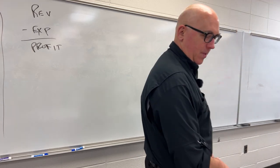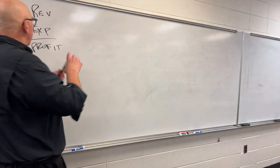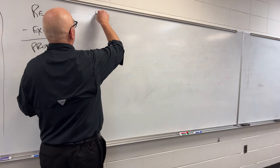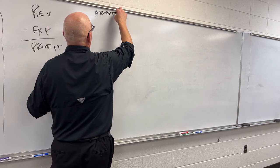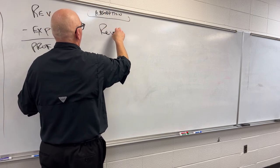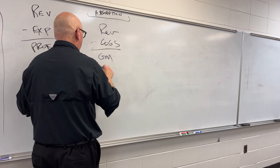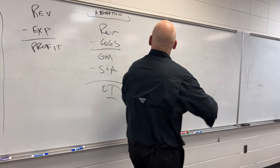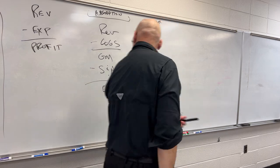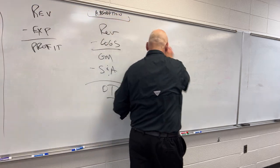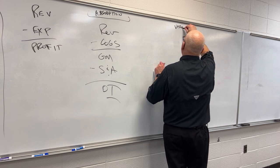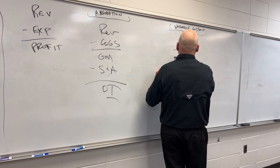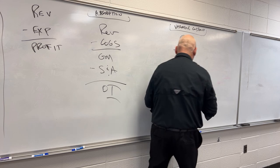Absorption costing income statement format. So this is the most simple calculation, but there are actually a couple of different ways this can be formatted. Absorption costing income statement format is: revenue minus cost of goods sold equals gross margin, minus selling and administrative expenses, equals operating income. And variable costing income statement is: revenue minus variable cost equals contribution margin, minus fixed cost, equals operating income.